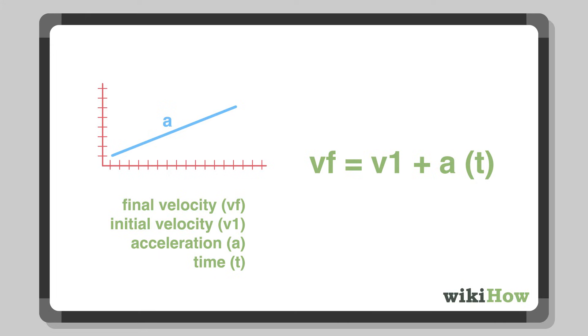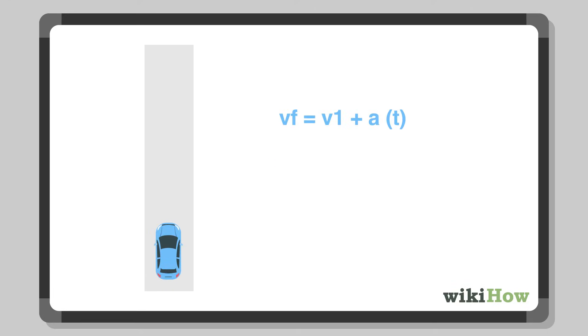For example, if an object accelerated north at a rate of 5 meters per second per second over 5 seconds and had a starting velocity of 6 meters per second,